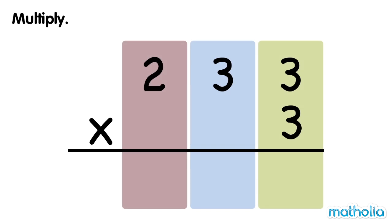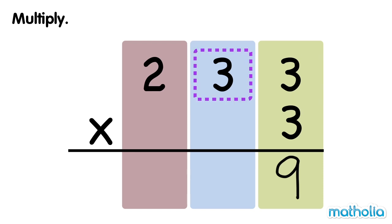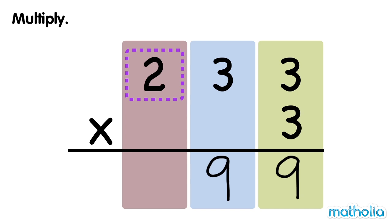Let's find 233 times 3. First, multiply the ones by 3. 3 ones times 3 equals 9 ones. Next, multiply the tens by 3. 3 tens times 3 equals 9 tens. Finally, multiply the hundreds by 3. 2 hundreds times 3 equals 6 hundreds. 233 times 3 equals 699.